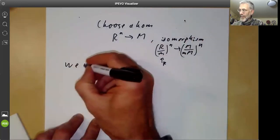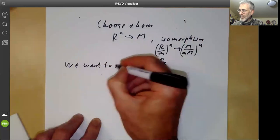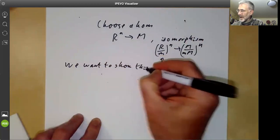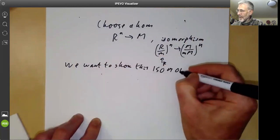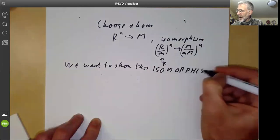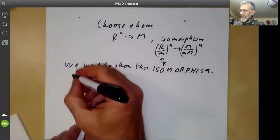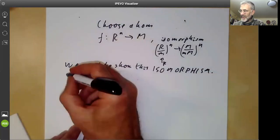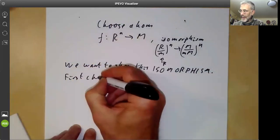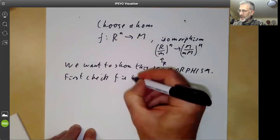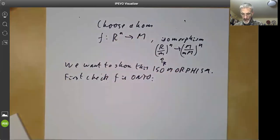And we want to show this is an isomorphism. And we will show it is an isomorphism by using Nakayama's lemma over and over again. First check it's onto. Let's call this F. So we first check F is onto.